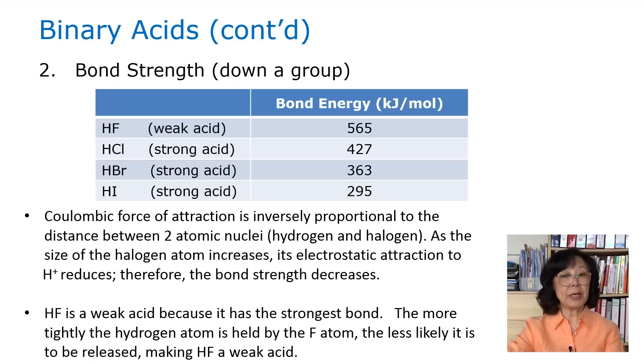HF is a weak acid because it has the strongest bond. The more tightly the hydrogen atom is held by the F atom, the less likely it is to be released, making HF a weak acid. Remember when we compare down a family group, we are looking at bond strength. The stronger the bond strength, the weaker the acid. And the smaller the bond strength, the stronger the acid.